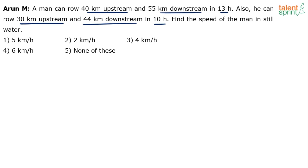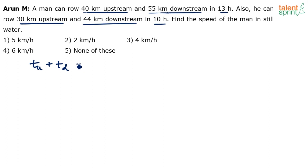So how do we work on this? The first equation says that time taken to go upstream plus time taken to go downstream equals 13 hours. Time is equal to distance divided by speed, so time taken upstream plus time taken downstream equals the total time given.